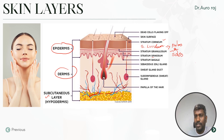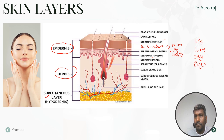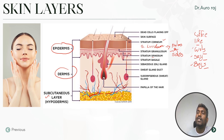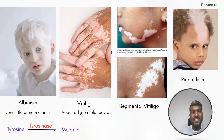To remember the stratum layers, we have a mnemonic: 'Boys Say Girls Like Coffee.' B is for Basale, S is for Spinosum, G is for Granulosum, L is for Lucidum, and C is for Corneum. Very important. Now let's look at albinism and vitiligo — remember tyrosine is converted into melanin by the enzyme tyrosinase.